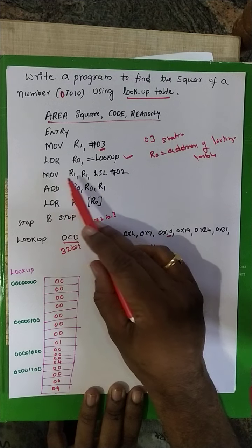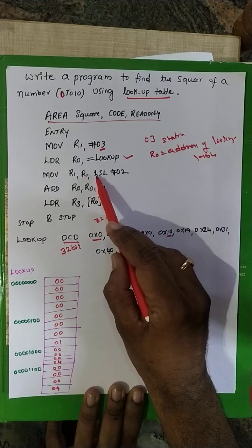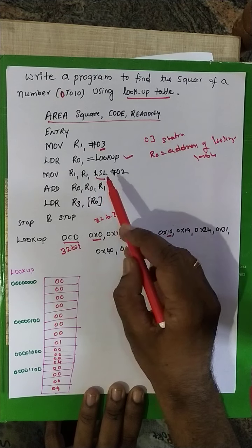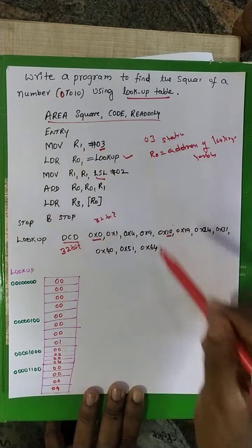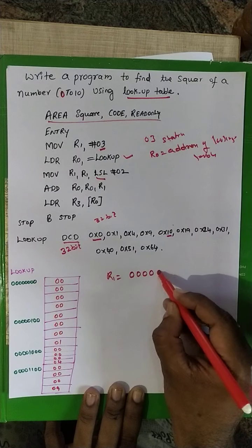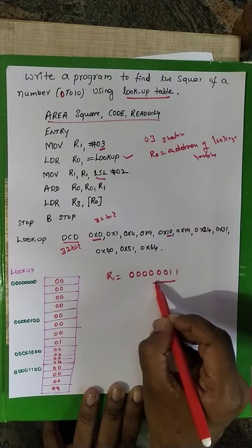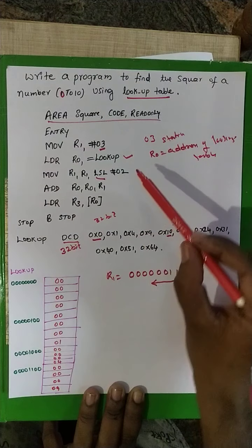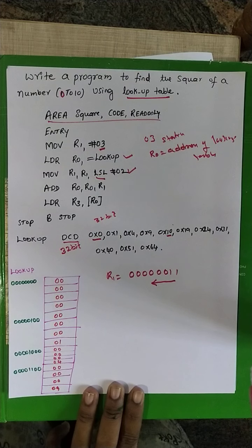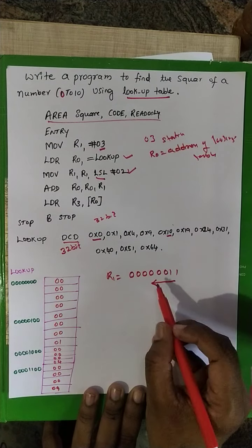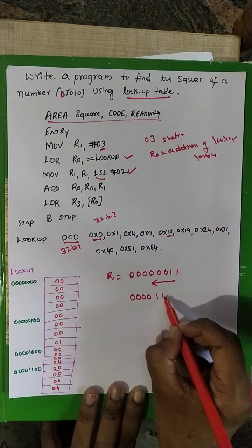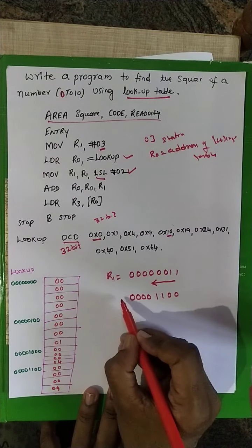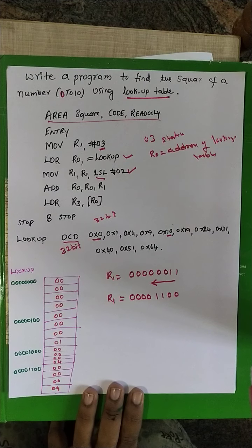The next instruction is: move R1, R1 LSL 2 — that is, logically shift left by 2 positions. R1 currently contains 3, which in binary is 0000 0011. After shifting left by 2 bits, the result becomes 0000 1100. So after this shift operation, R1 is equal to this new value.